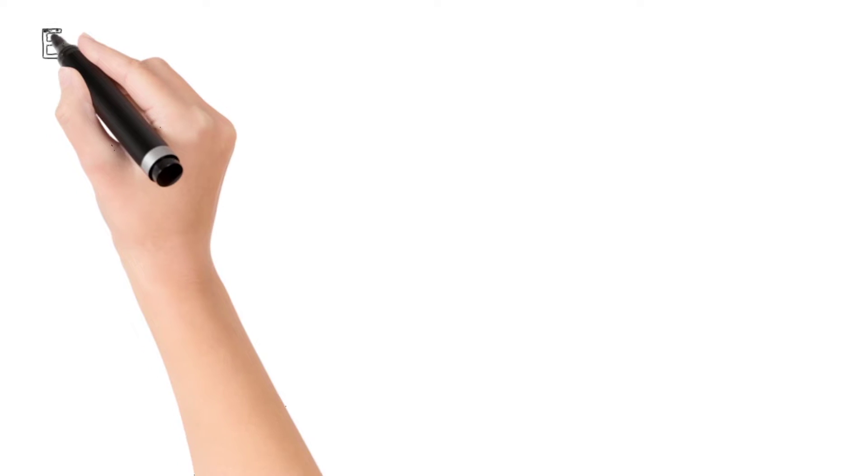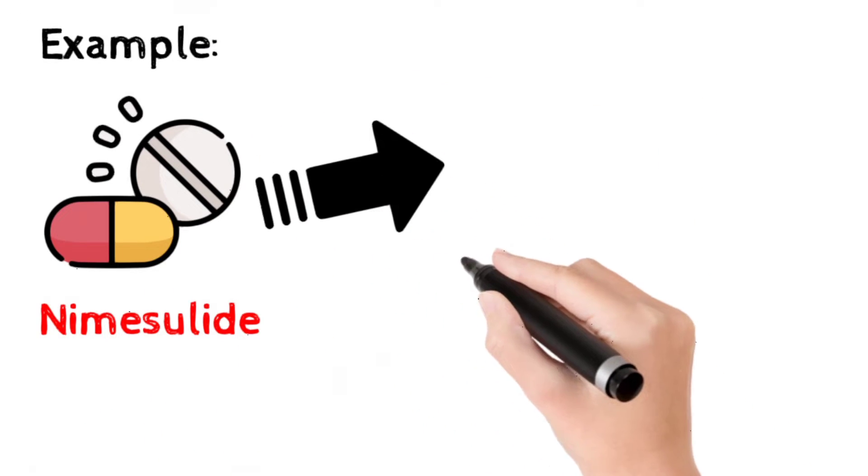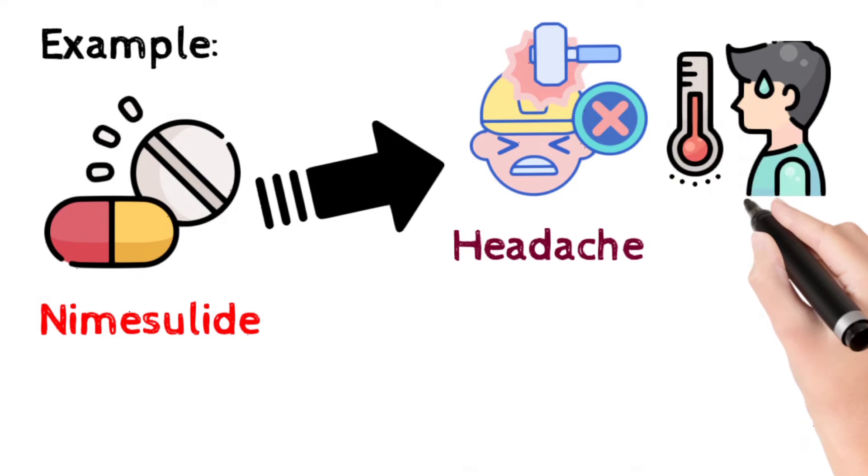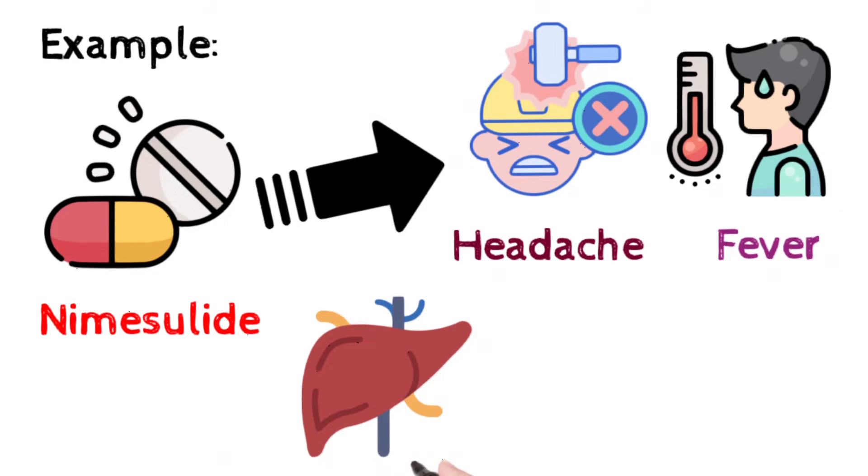To understand this, we will take an example of the drug Nemesulide. It's a medication used to treat acute pain like headache and fever. However, it has severe side effects like liver damage in the long run. So here we detect the signal of Nemesulide as liver damage.